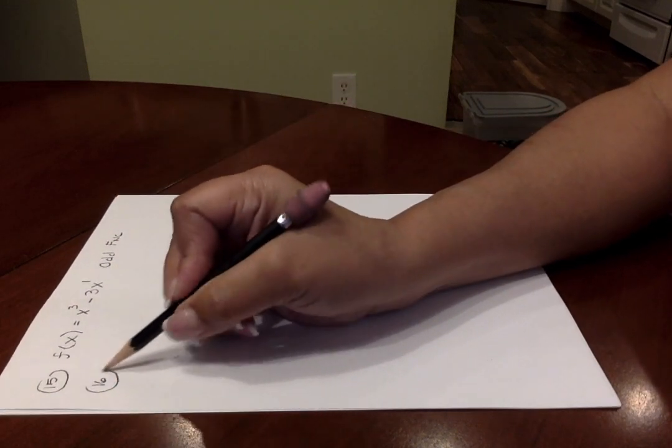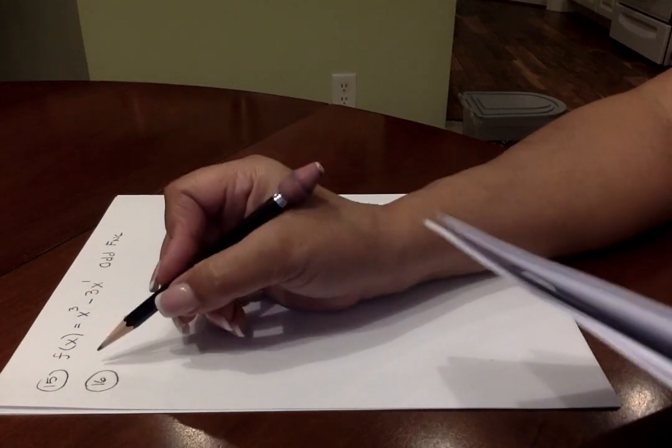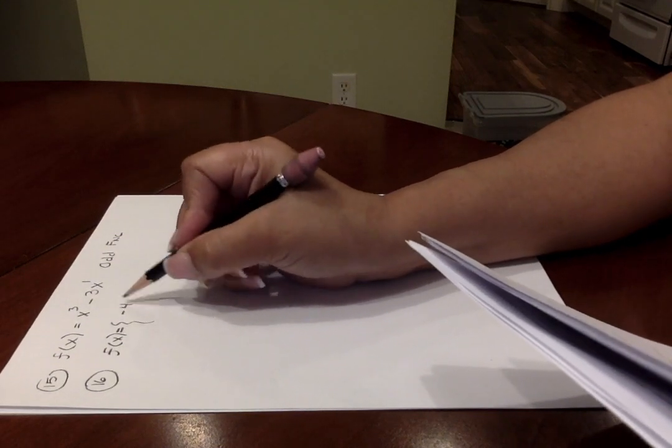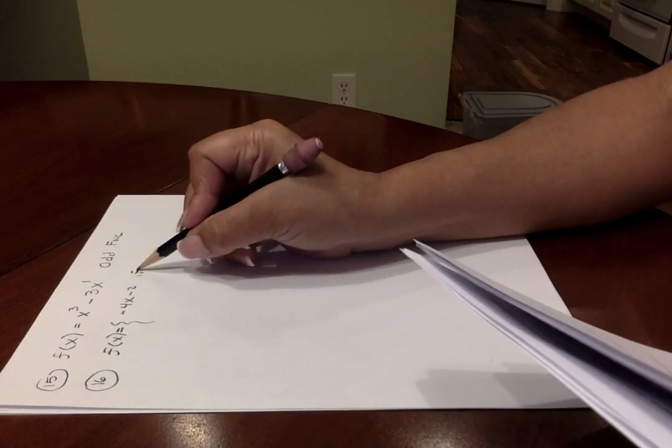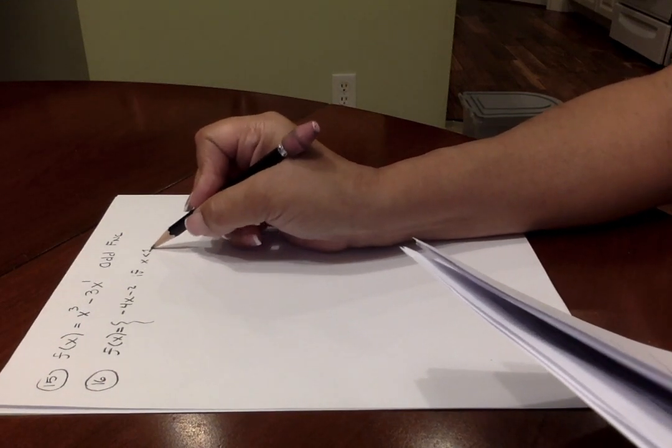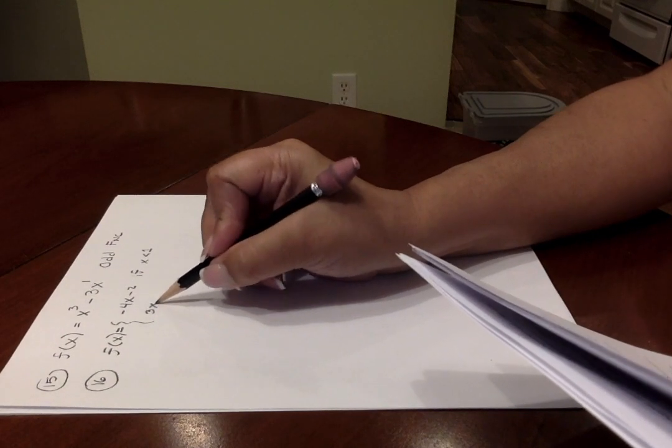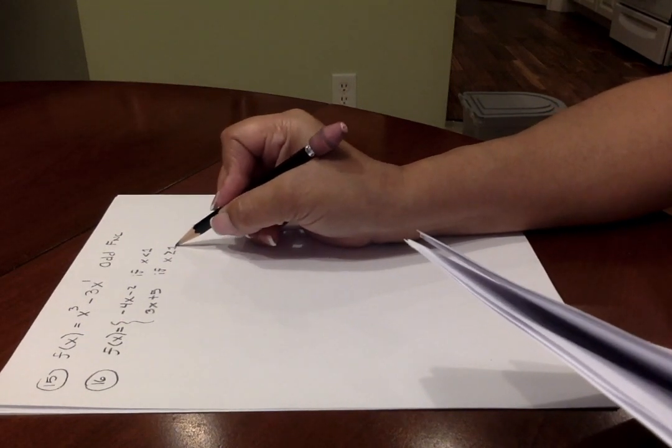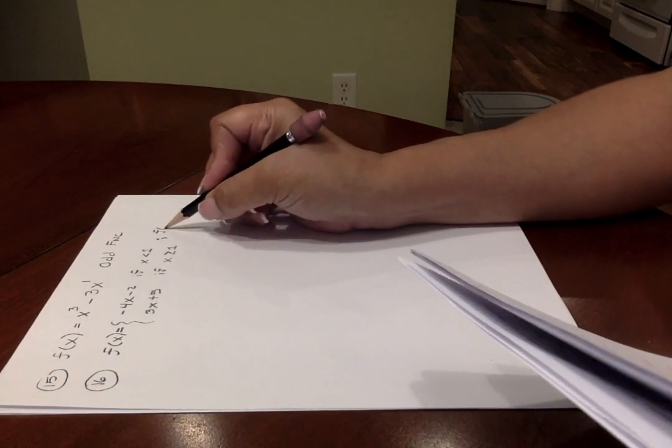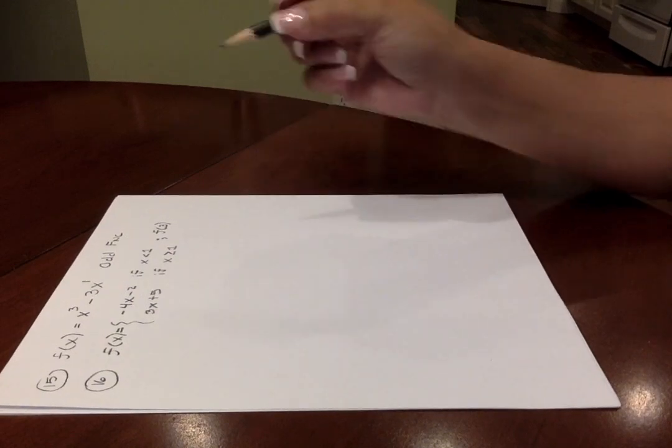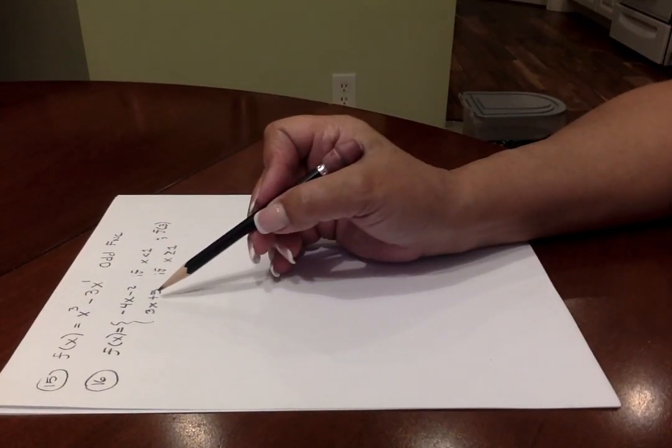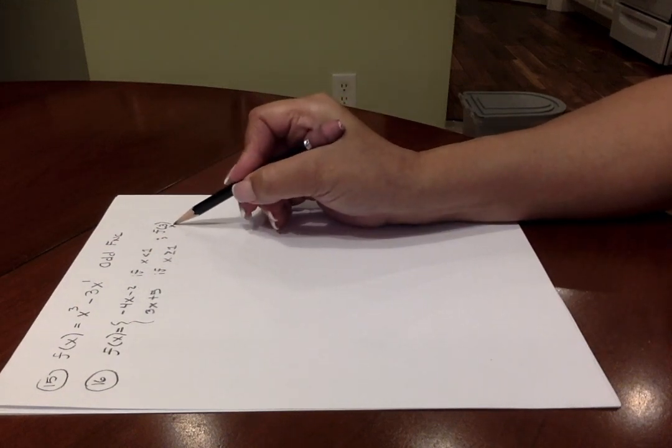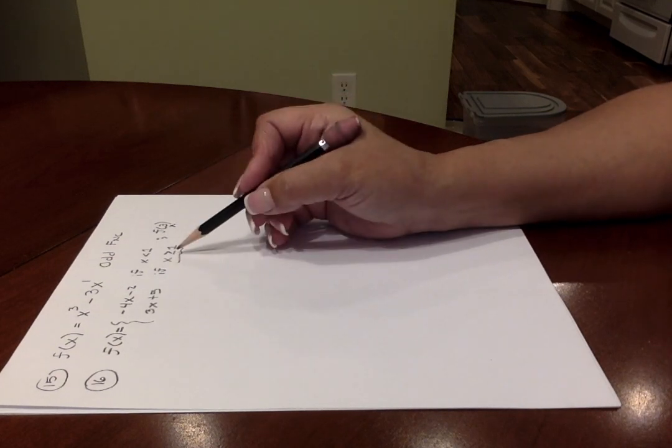Number 16. You're given a piecewise function. F of X is equal to negative 4X minus 2 if your X value that you're evaluating at is less than 1. However, you will use 3X plus 5 if the X value that you're plugging in is greater than or equal to 1. The question is to evaluate the function at 3. All you're doing in these problems is choosing which piece of the piecewise function is appropriate for the value that you're plugging in. You're plugging in an X value of 3, which classifies as a number greater than or equal to 1.